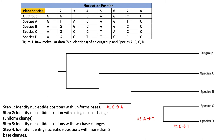Steps one and two are complete. We handled columns eight, four, five, and one, leaving four columns. Step three is to identify nucleotide positions with two base changes. For column six, we went from G to A, but that change was not uniform in all descendants because it went back to G. That reversion is the two base change: G to A, then A back to G. Column seven works the same way: C to T, then T back to C.